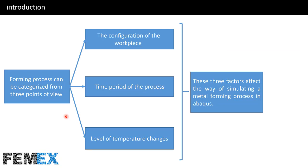We can categorize forming processes from three points of view. First, the configuration of the workpiece. Second, the time period of the process. And third, the level of temperature changes. These three factors affect the way of simulating a metal forming process in Abaqus.